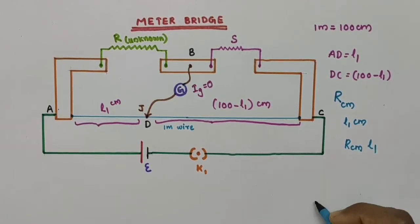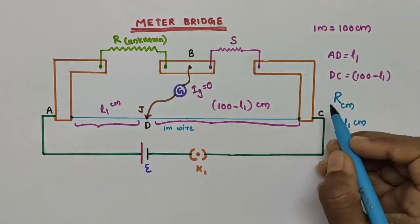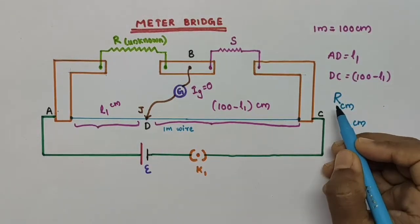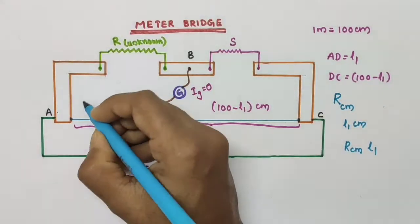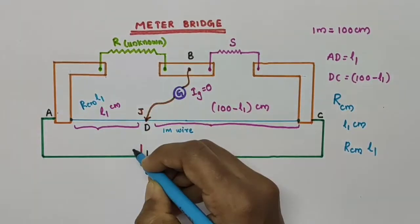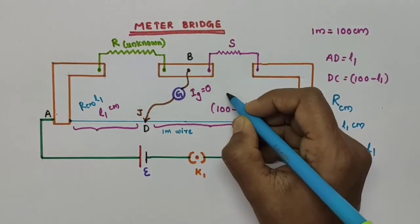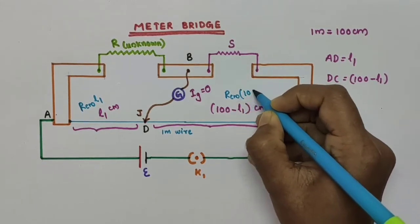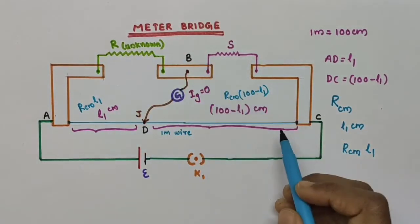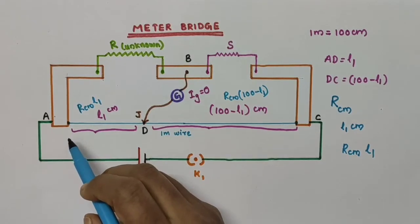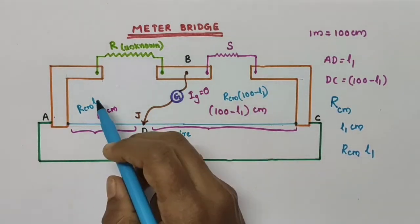The resistance of the wire of length L1 centimeter is RCM into L1. Similarly, the resistance of the wire of length 100 minus L1 centimeter will be RCM into 100 minus L1. So the four arms AB, BC, CD and DA of this bridge have resistances R, S, RCM into 100 minus L1, and RCM into L1.